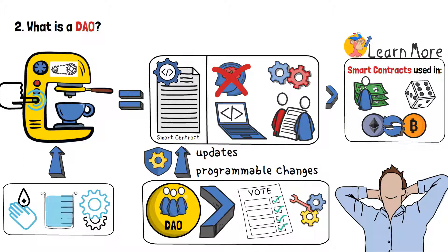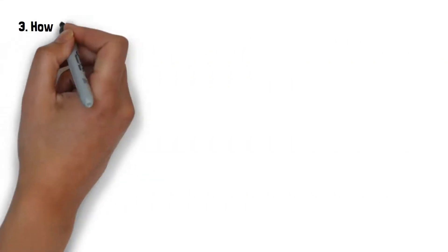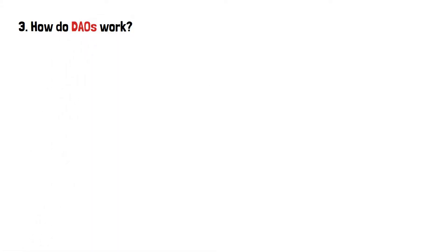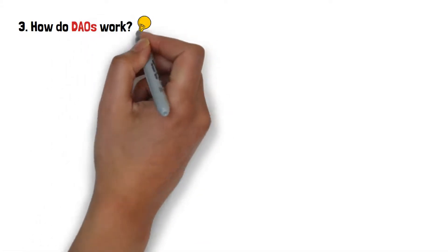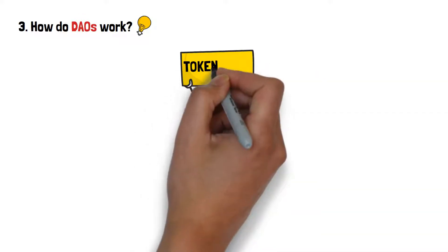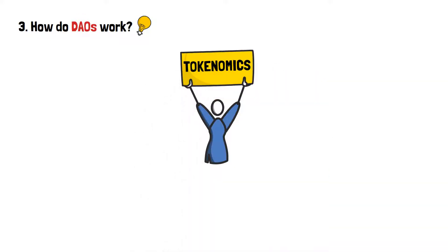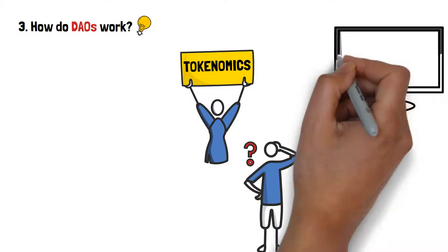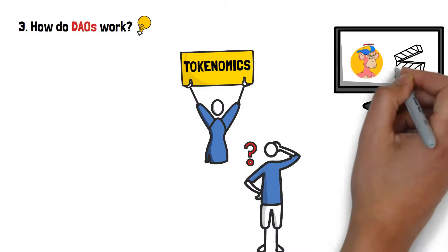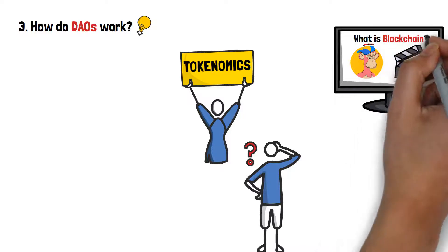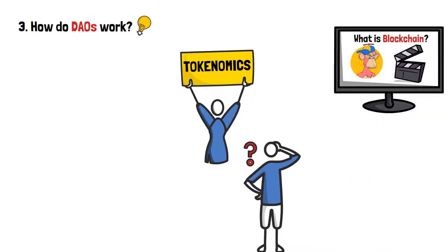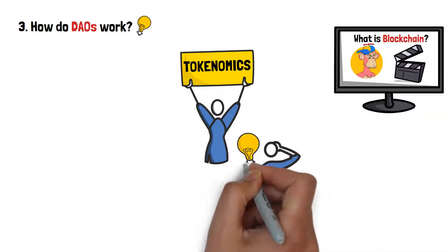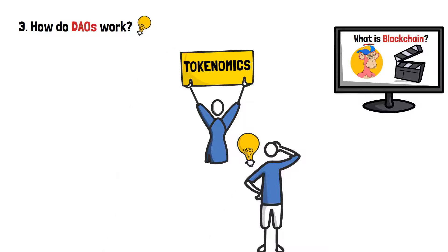Now that you have a bit of a better idea of what is a DAO, you might naturally wonder how they work. The underlying idea behind DAOs is actually pretty simple. However, we're going to touch on a bit of tokenomics. If this term isn't familiar to you, or you don't understand how blockchains work fundamentally, I would strongly advise you to check out my video on what is a blockchain before watching this one further. That will give you a better understanding of what to expect when it comes to DAOs.